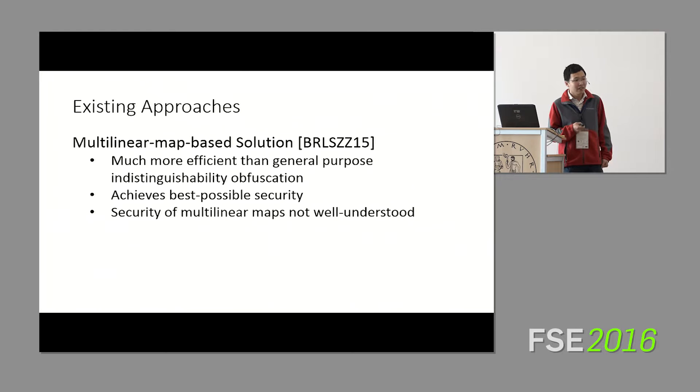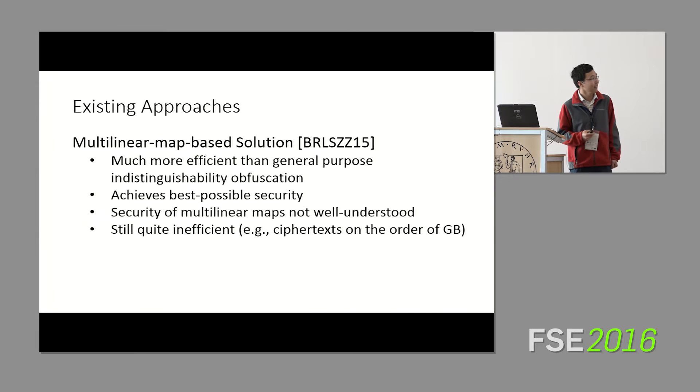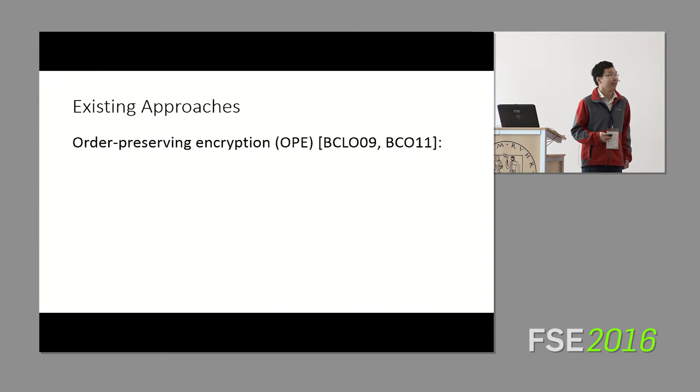In fact, if you look at the last couple of months, there has been numerous attacks on current multilinear map candidates that has raised a lot of doubts about the security of constructions that rely on these multilinear maps. And on the other side, these constructions, while more efficient than IO, that is not saying too much. The efficiency of these still leaves a lot to be desired. Just as a point of comparison, a typical ciphertext using this scheme will be on the order of gigabytes given current multilinear map candidates. This is, again, not something that people could use in practice if we want to do order-revealing encryption.